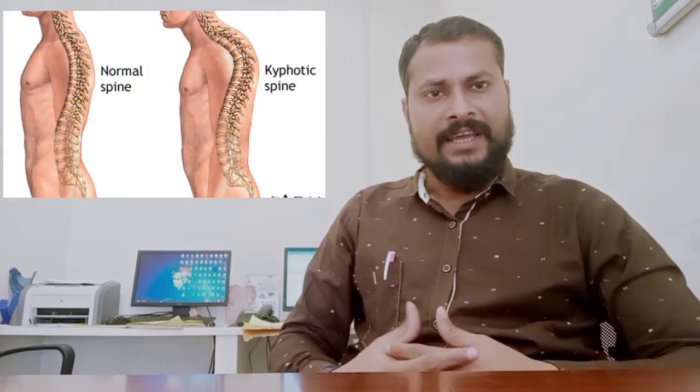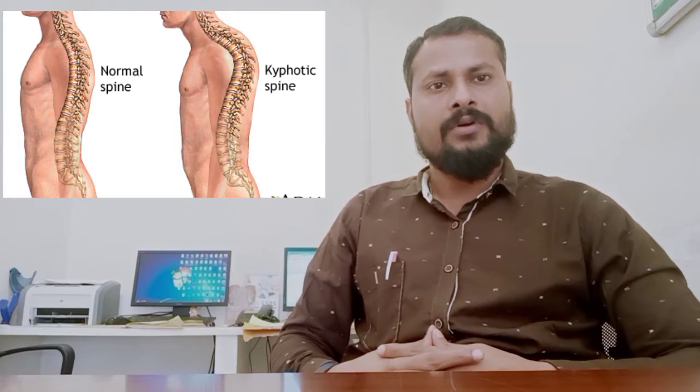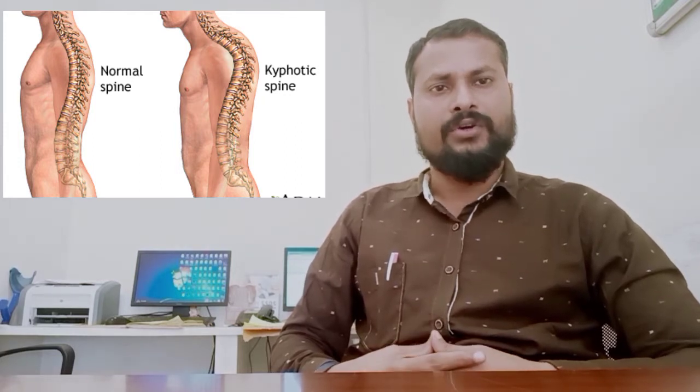Hello friends, namaskar. This is Priyabhat Mishra, welcoming you again with an exclusive subject: kyphosis. Kyphosis is a forward bending of the upper back, otherwise known as rounded shoulder or hunchback. There are two types of kyphosis — postural and structural. Today in this video we will only discuss postural kyphosis correction exercises.